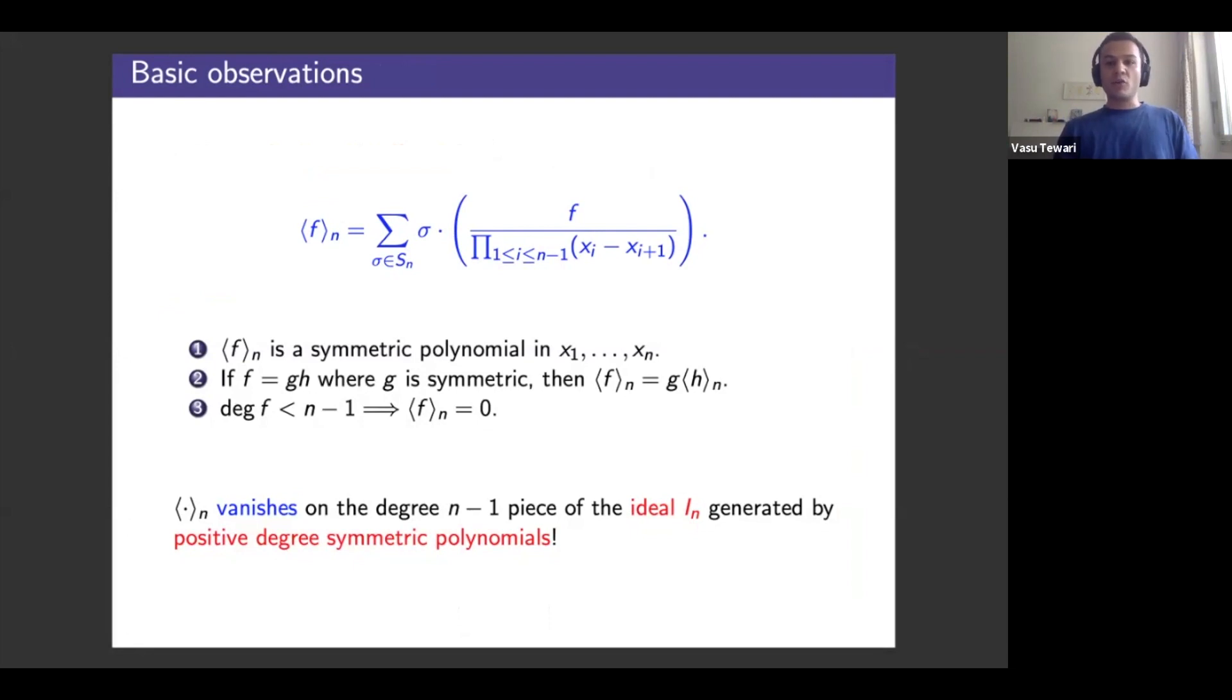Then what you obtained after you sum the six rational functions is x1 plus x2 plus x3. Some observations: contrary to appearances, divided symmetrization gets you honest polynomials, symmetric polynomials in the n variables. Property two which is kind of handy: anytime you have a symmetric factor you can pull out the symmetric factor and perform the divided symmetrization on the rest. And thirdly for polynomials of low degree, meaning the degree's less than n minus one, divided symmetrization gets you zero.